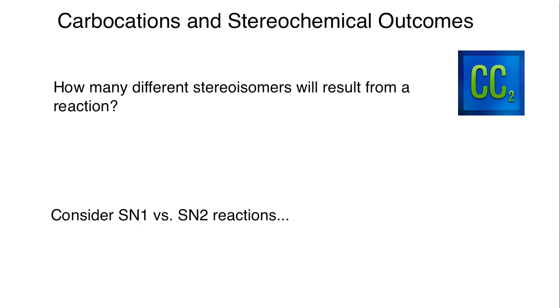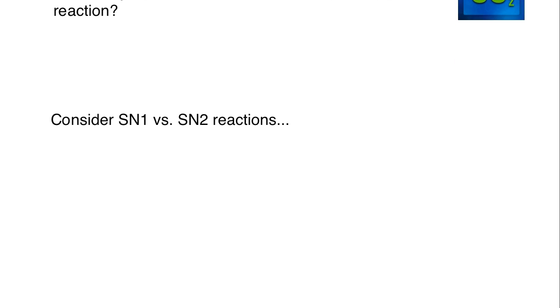This is primarily when we're talking about it on a stereochemical basis. SN1 and SN2 are really good examples of what we're talking about here. I want to go through an example of each of those and then we're going to look at carbocations and why they are so important based on their structure in terms of determining stereochemical outcomes.